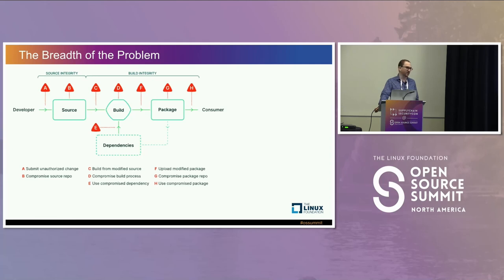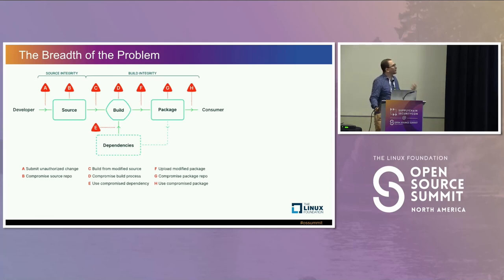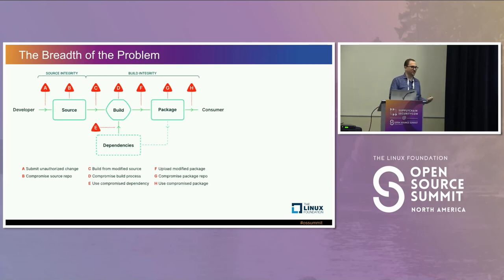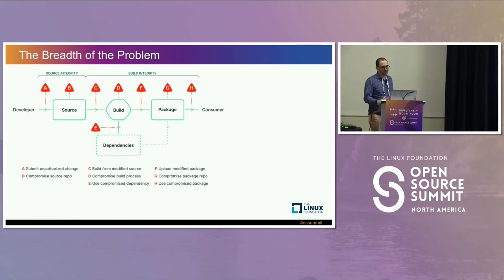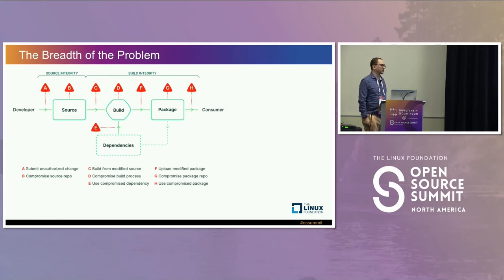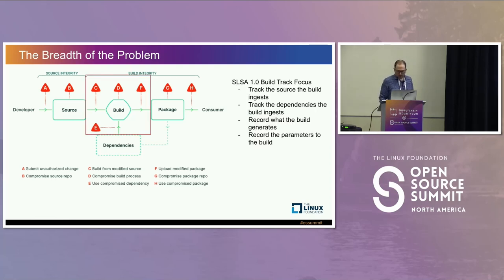Then there are all the dependencies you might be pulling in — OpenSSL, glibc, Log4j — what happens with dependency confusion attacks, typosquatting, and all sorts of things that could possibly happen? Even after you've built your software, what if somebody manipulates it before it reaches the package repository? What if somebody messes with your package repository so you think you're hosting Acme app X but you're hosting something malicious? And there are risks at the consumer level too.